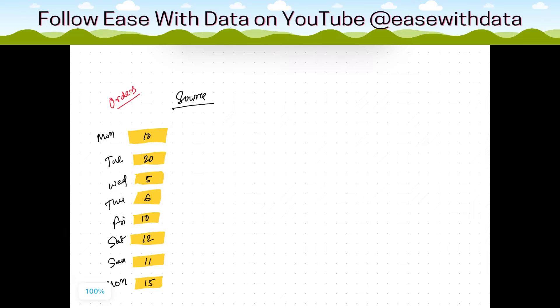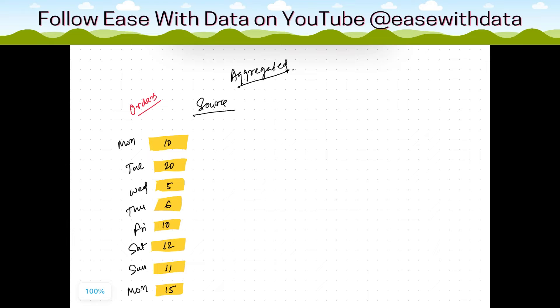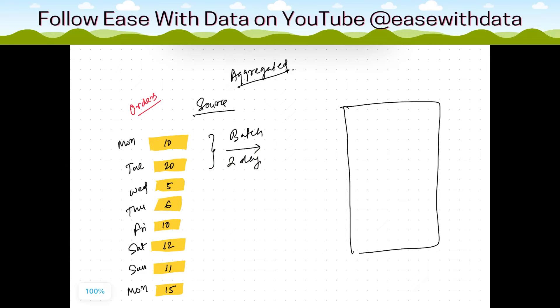Now let's talk about the aggregated fact, which is the periodic snapshot. Consider we have orders where on Monday we have 10 orders, Tuesday, Wednesday, and similarly till next Monday we have 15 orders. Consider your batch is running every two days. What will happen at the target side? If we aggregate this, it is two days of data loaded at a time.